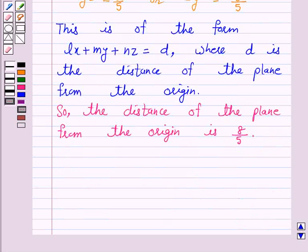Hence the direction cosines of the normal to the given plane are 0, 1, 0 and its distance from the origin is 8 over 5. So this is the answer for the above question.